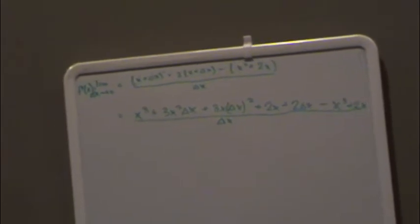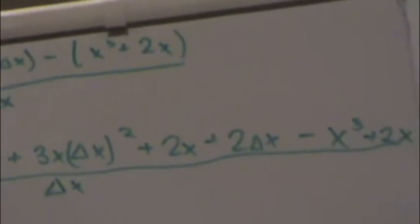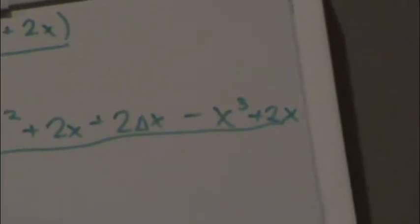Now you're going to do a lot of combining of like terms. And if you distribute the negative, it should be negative x cubed minus 2x, right?